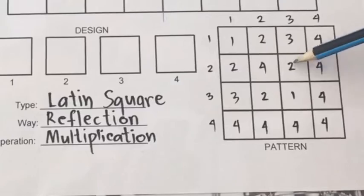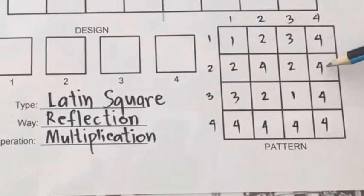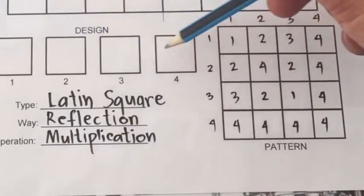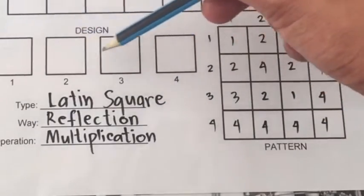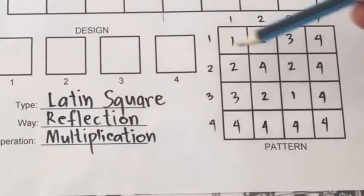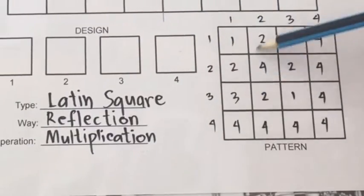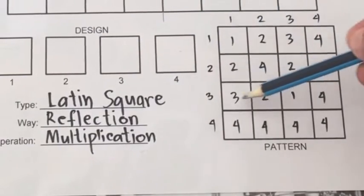So put 2 there. 4 times 2 is 8 — counting 1, 2, 3, 4, 5, 6, 7, 8 — it's 4. 1 times 3 is 3.